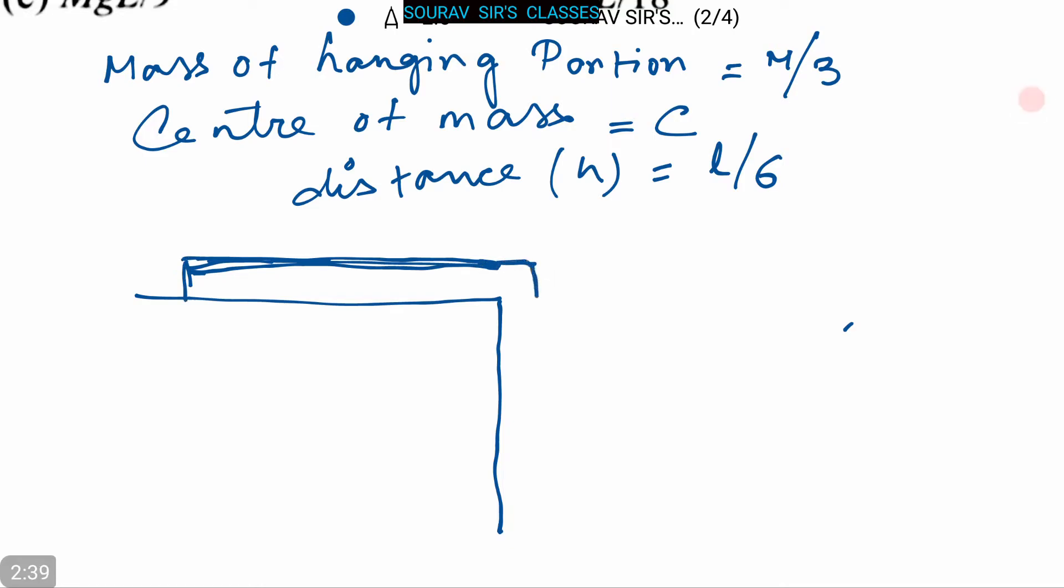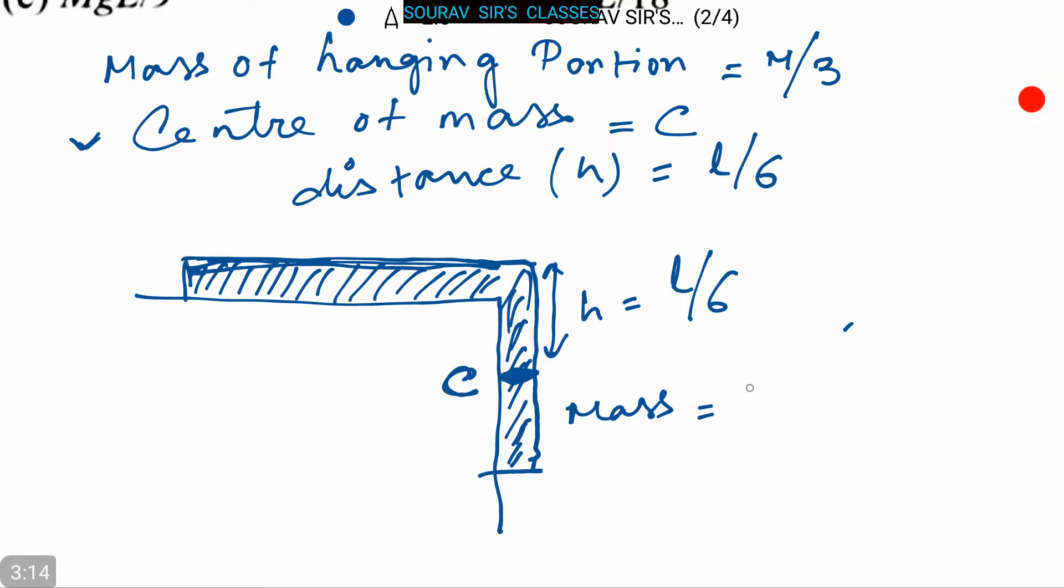This portion is the hanging portion, we can shade it. This is the midpoint, the center of mass C. This is H, where H equals L/6, and the mass of this portion is M/3 as given in the question.